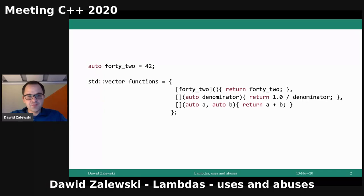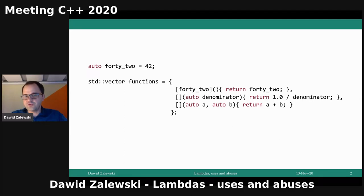To give you a glimpse of what it's about: I think many of you already tried to write code like this — you had a couple of Lambdas and you tried to put them into a container, let's say a vector, to store them for later usage. And of course, this doesn't work whatsoever, because we are trying to put different Lambdas into a homogeneous container which only accepts one type, and those are totally different Lambdas.